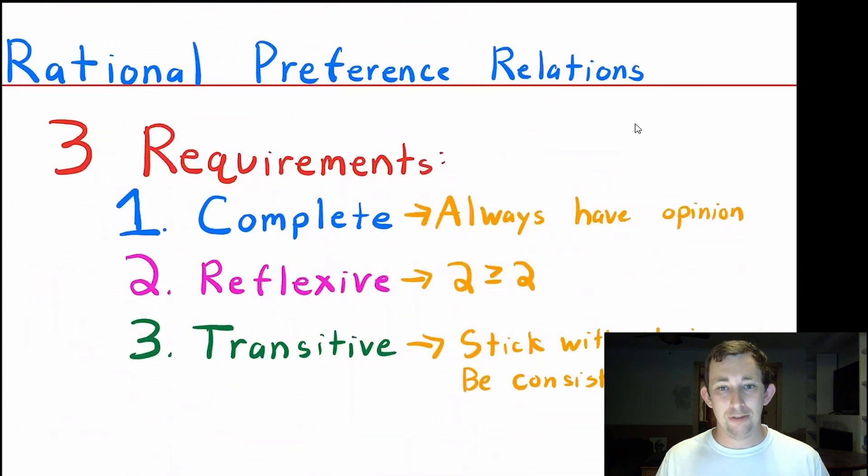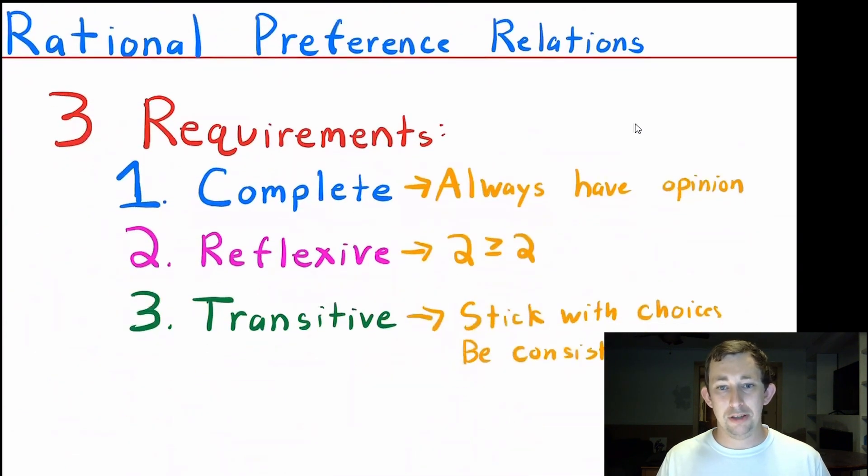To have a rational preference relation means that you are complete, so you always have an opinion, your preferences are reflexive, two is greater than or equal to two, and you're transitive, you stick with the choices you make regardless of what other options come up, and you are internally consistent.